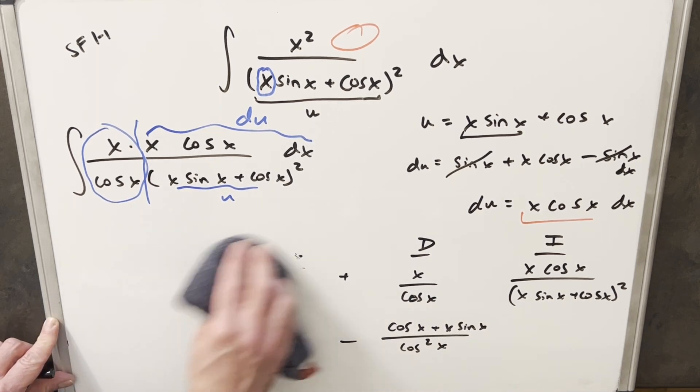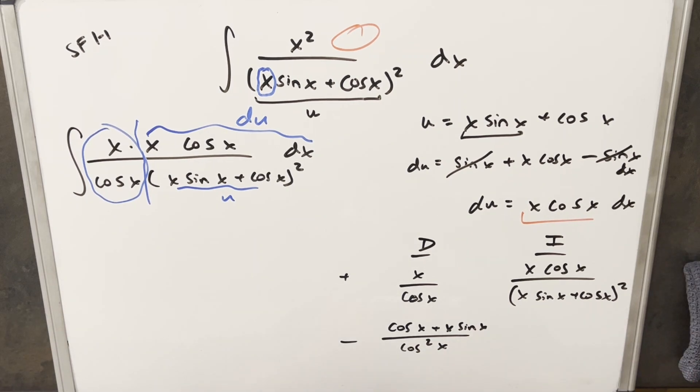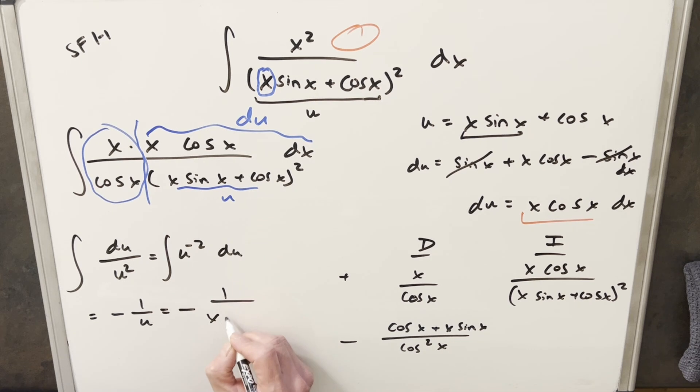Okay, next we want to integrate this thing over here on the right. Now we really have this set up, but let me just kind of do the u substitution over here just so we can make it clear. So this thing was going to turn into du over u squared, which I can write as u to the minus 2 du. Do the power rule on that. We get minus 1 over u, or just minus 1 over this thing, x sine x plus cosine x. So then we'll just copy this over here.